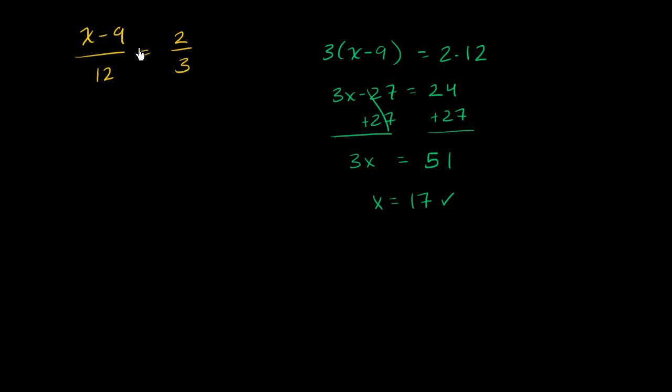Another way you could do that, instead of just straight up doing the cross multiplication, you could say, look, I want to get rid of this 12 in the denominator right over here. Let's multiply both sides by 12. So if you multiply both sides by 12, on your left-hand side, you are just left with x minus 9.